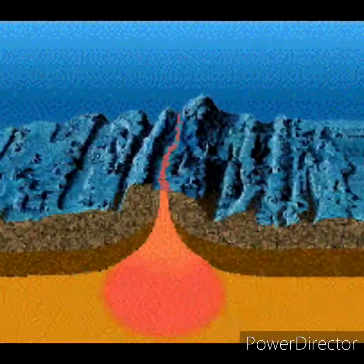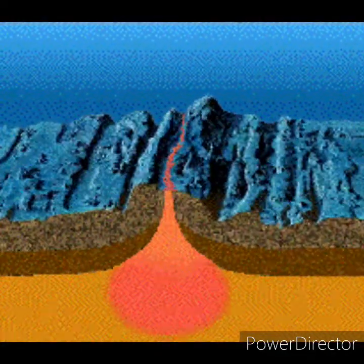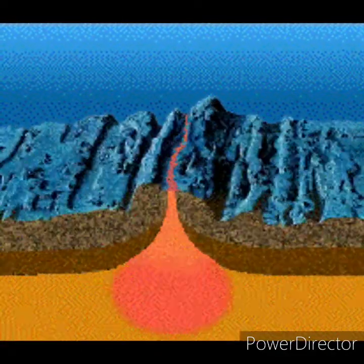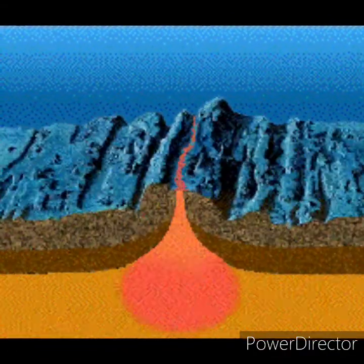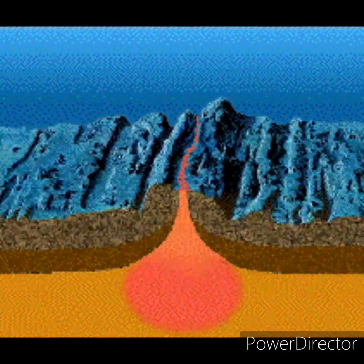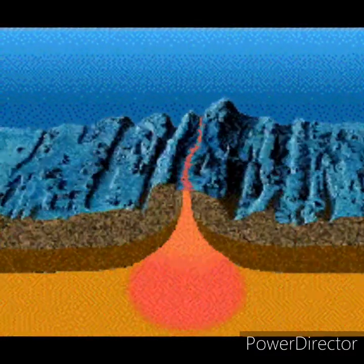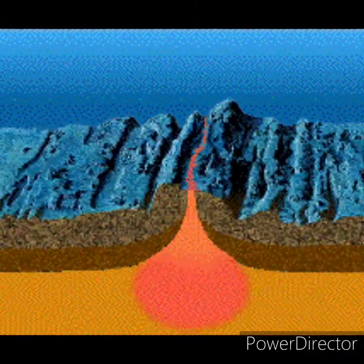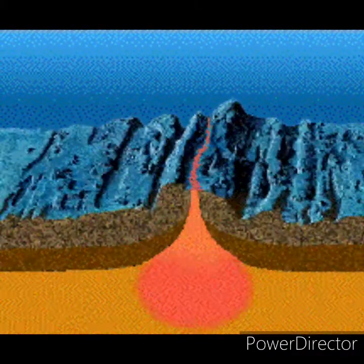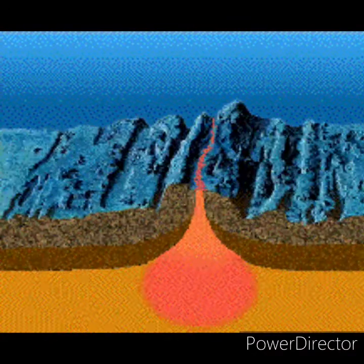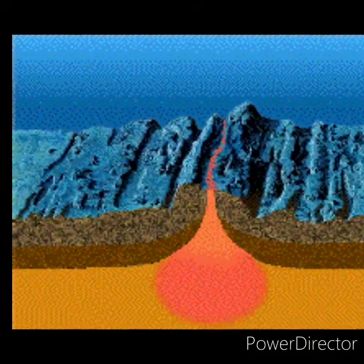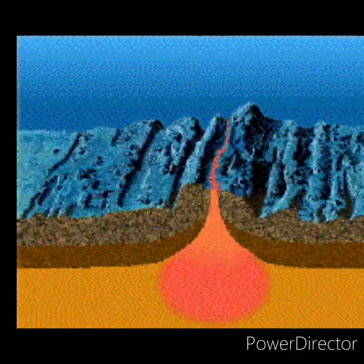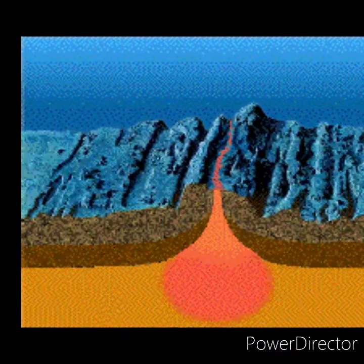Oceanic Ridge: An oceanic ridge is a continuous submarine mountain chain. They are made of young basaltic rock formed when two tectonic plates move apart. The mid-ocean ridge is probably the most extensive single feature of the Earth's topography. Two of the most well-known mid-ocean ridges are the mid-Atlantic ridge and the east-Pacific ridge. The mid-Atlantic ridge is the largest unbroken oceanic ridge.